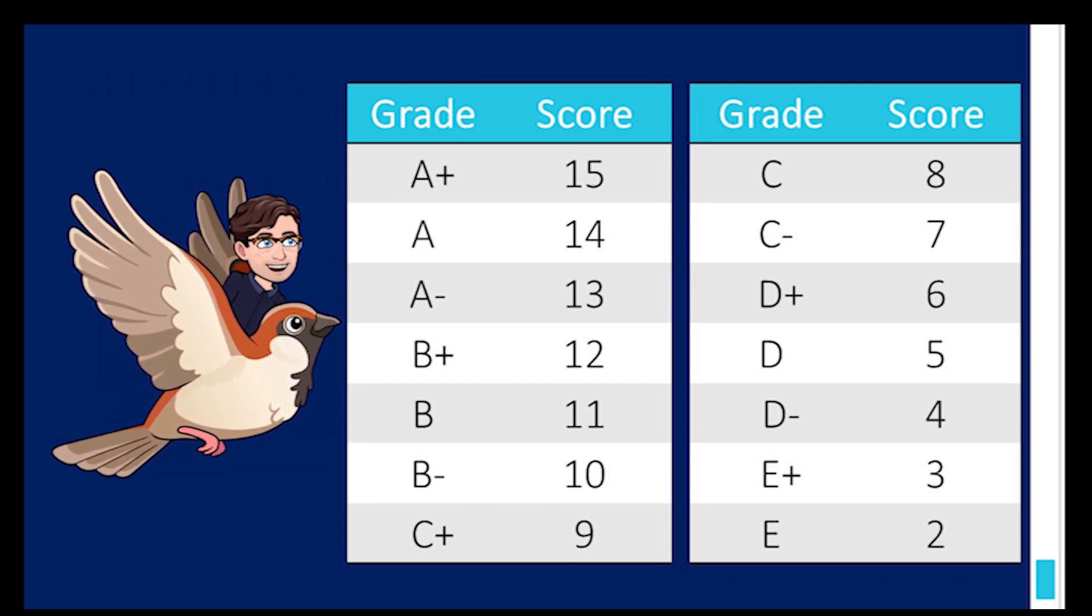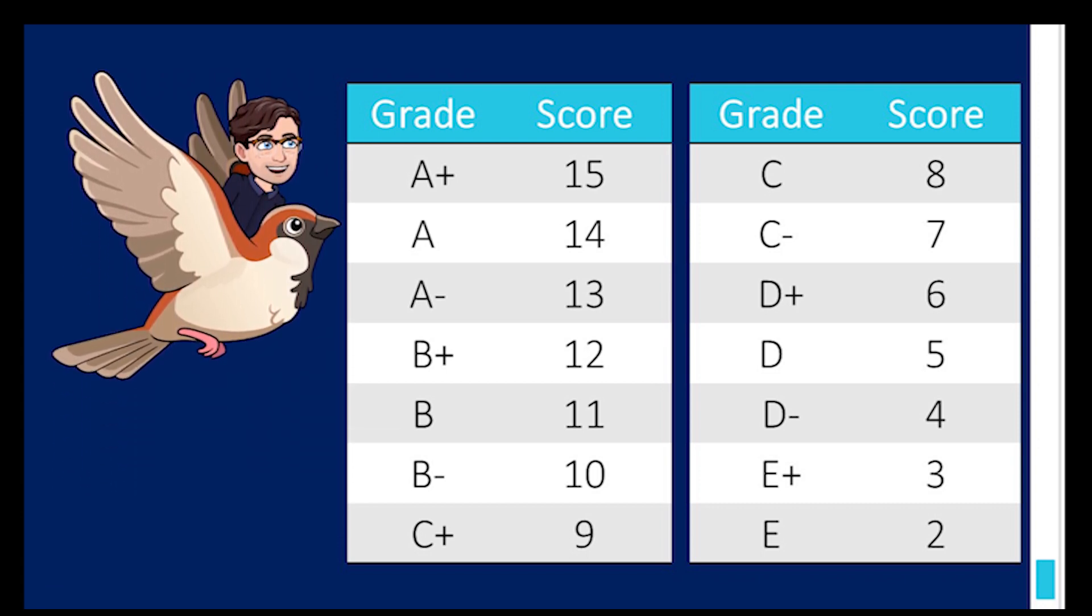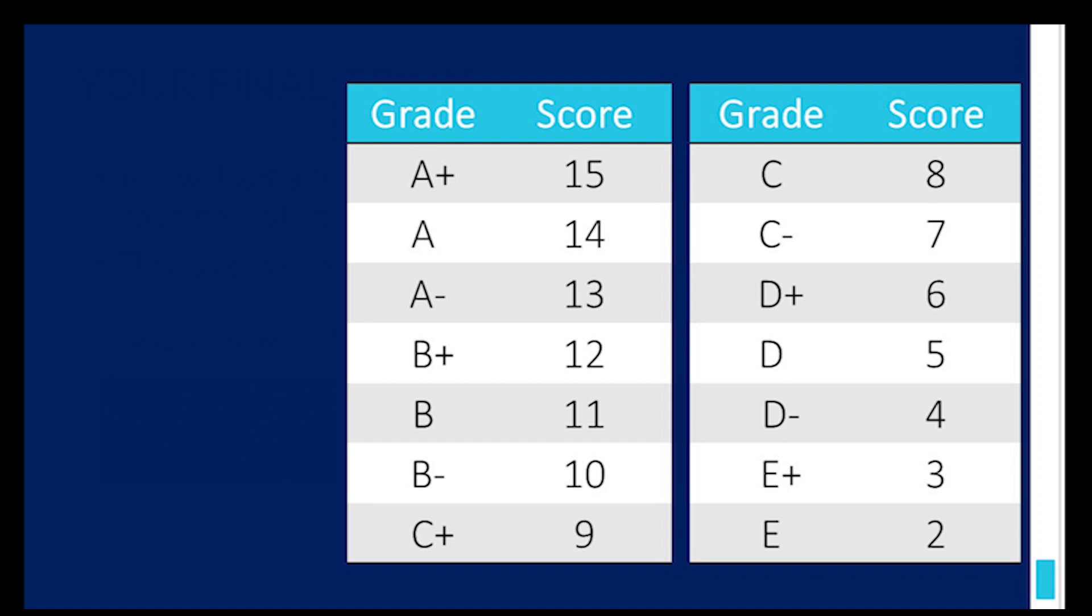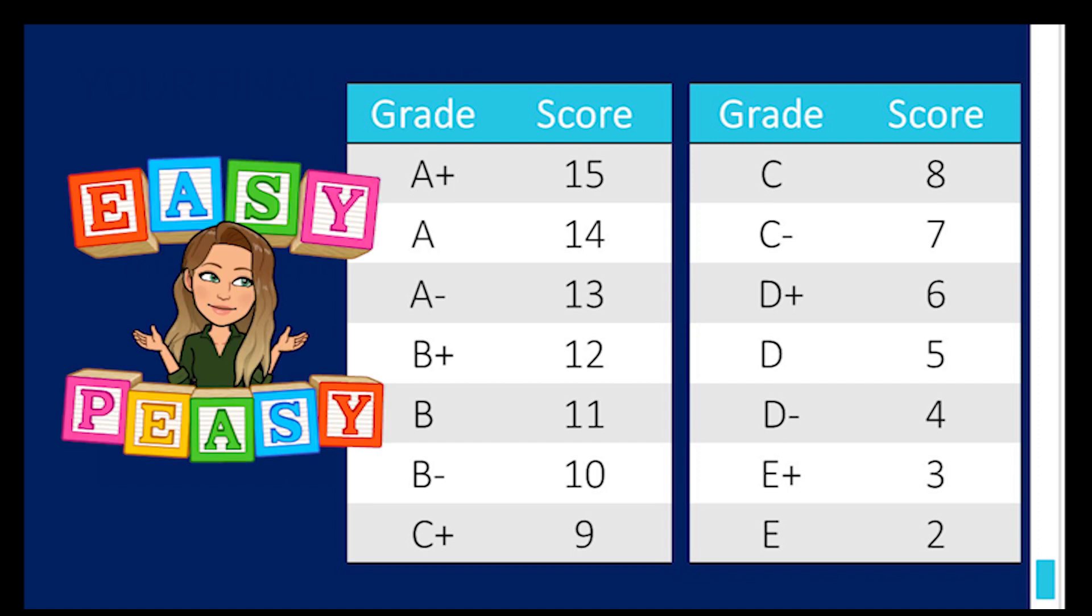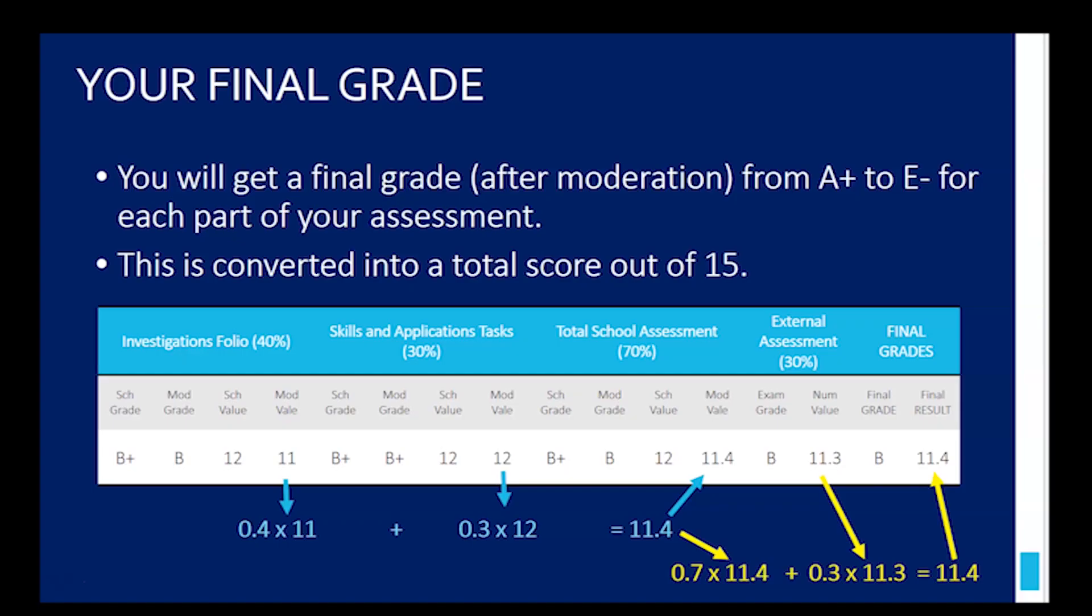If you write out the numbers A+ to E- on a piece of paper, and on the side you write out 1 to 15, you'll notice there's the exact same number of letters as there are numbers. That's how we get it. So an A+ is 15, an A is 14, A- is 13, and so on all the way down to an E- which is 1. Hopefully none of you ever see that number.